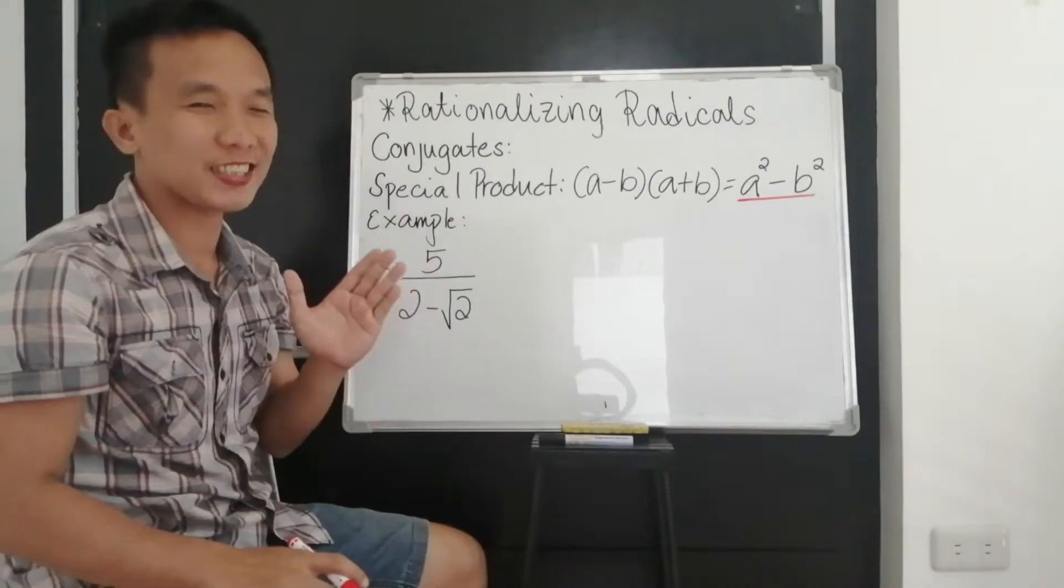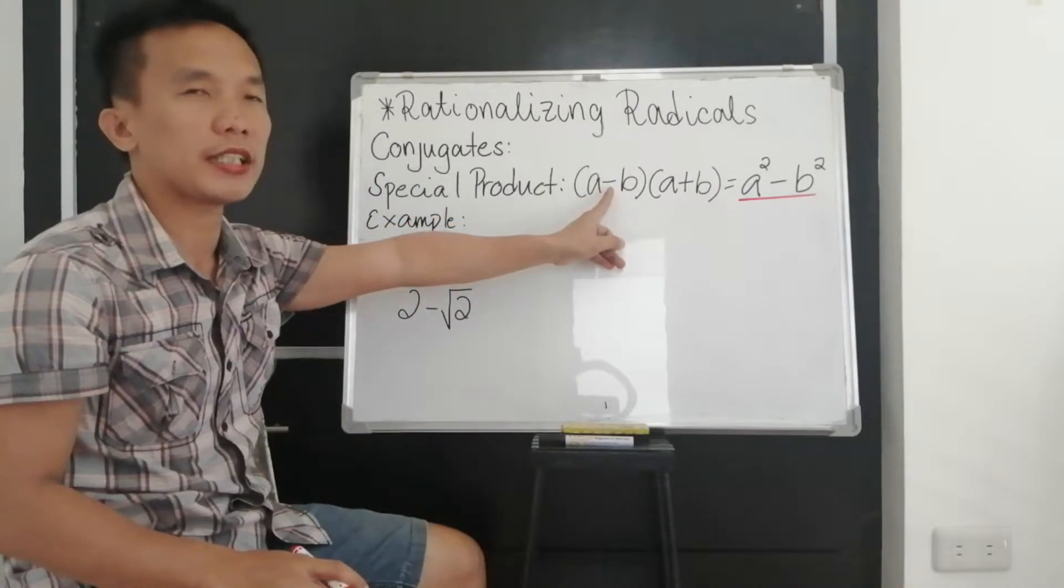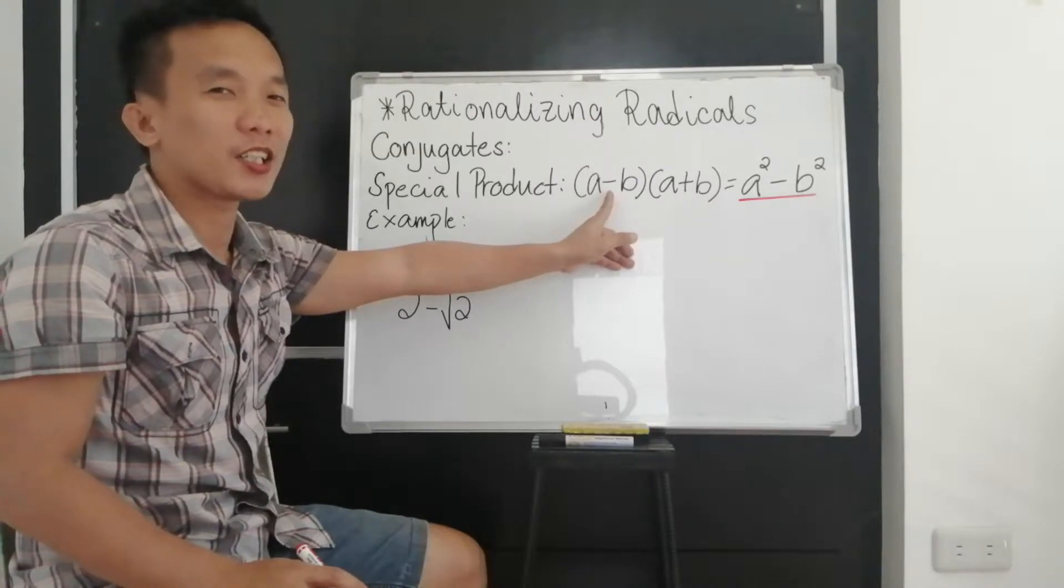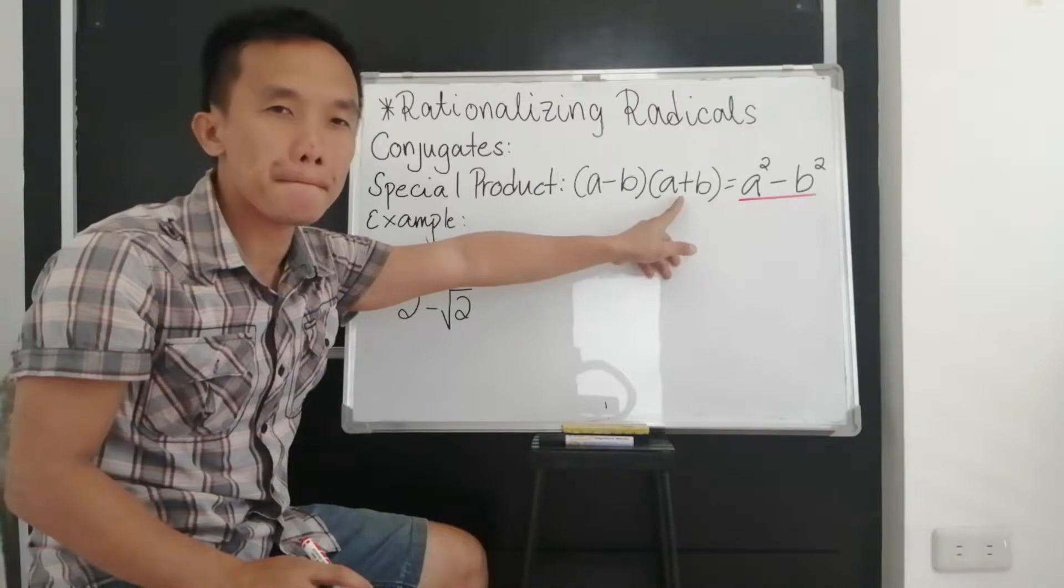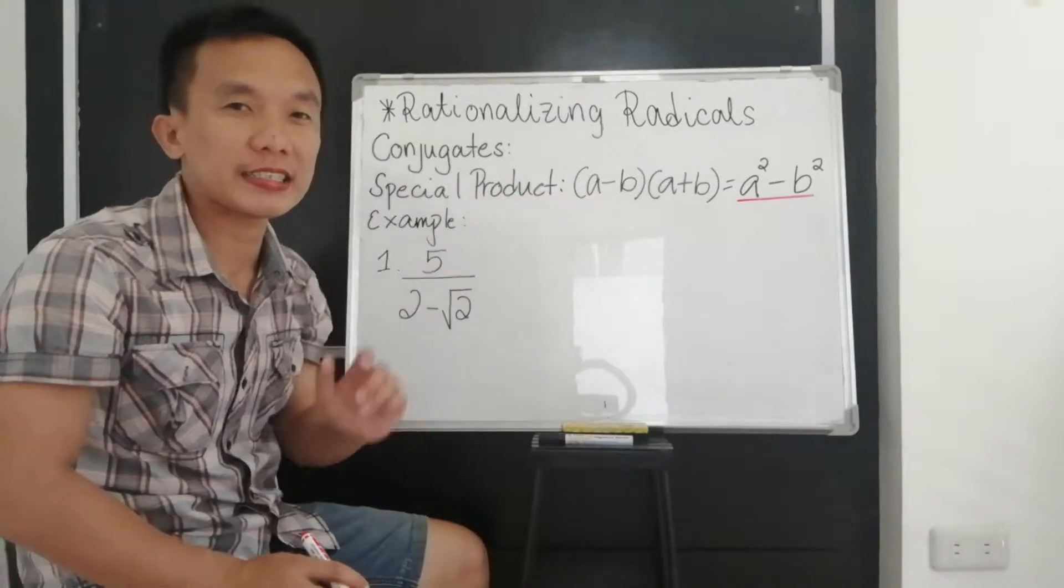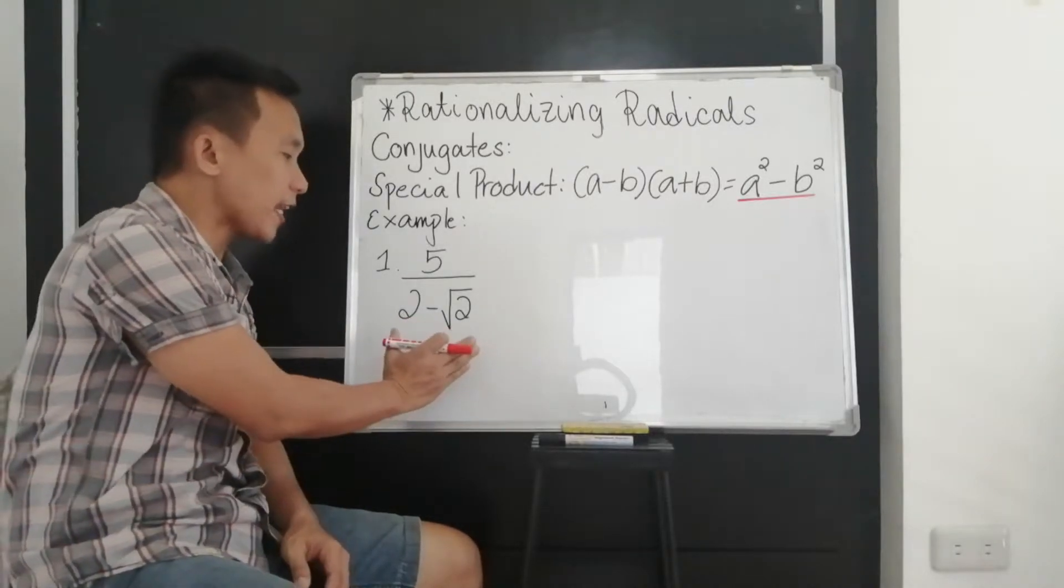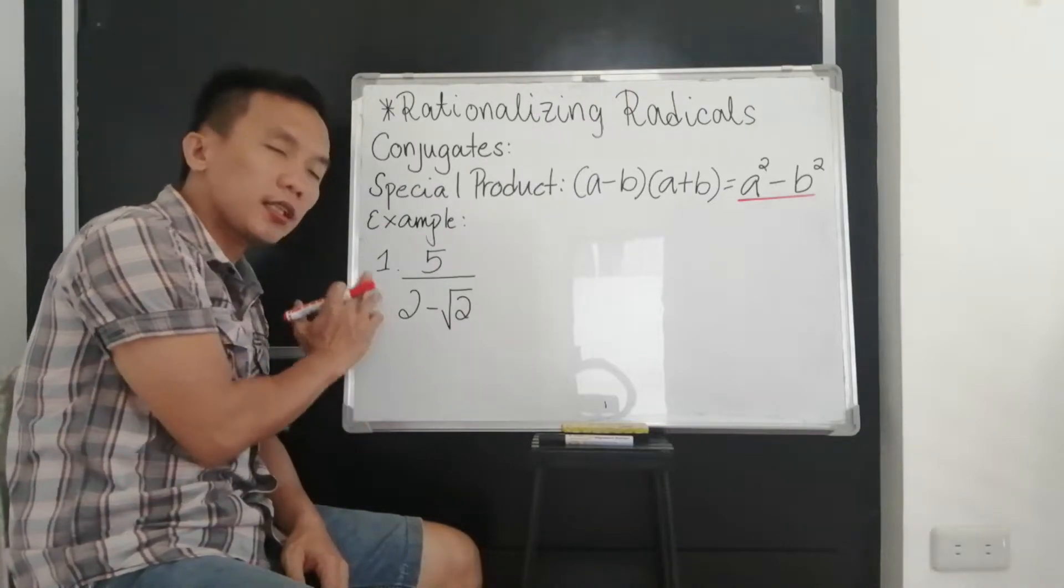So what is conjugates? Now if you have minus in your denominator, you are going to multiply the opposite of that, which is positive. That's why I put it there, the special product. So for us to easily understand that, we have our first example.